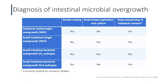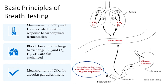How breath testing works: we usually use a sugar substrate such as glucose or lactulose — either 10 grams of lactulose or 75 grams of glucose. At baseline, patients exhale into a bag. After drinking the sugary substrate, every 15 minutes they collect a breath sample with the same exhalation into the bag. We then measure the amount of hydrogen as well as methane, and in some tests, hydrogen sulfide as well.